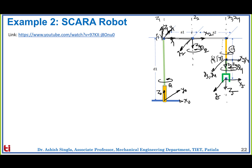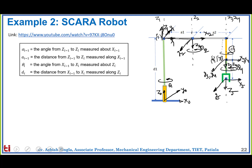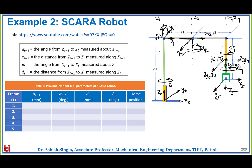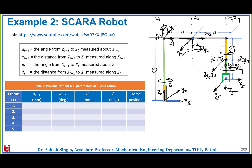After carefully assigning all frames, the next step is developing the DH parameter table. It is recommendable to fill the table column-wise. Taking the first parameter as link length A(i-1): A0 is Z0 to Z1 along X0 which is 0. Z1 to Z2 along X1 gives A1. Z2 to Z3 along X2 gives A2. Z3 to Z4 are coincident so it's 0. Z4 to Z5 are in the same line, also 0.